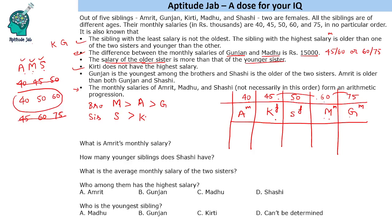Arranging everyone by age: Madhu is the oldest. Amrit is second since he is older than both Gunjan and Sashi but not the oldest (the clue says the sibling with the least salary — Amrit — is not the oldest). Then Sashi is third. Since Gunjan (highest salary) is older than Kirti but younger than Sashi, Gunjan is fourth and Kirti is the youngest. So the age order from oldest to youngest is: Madhu, Amrit, Sashi, Gunjan, Kirti.